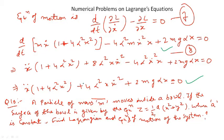Hello everyone. Today we will solve some more numerical problems based on Lagrangian equations. The first problem is: a particle of mass m moves inside a bowl. If the surface of the bowl is given by the equation z = (a/2)(x² + y²), where a is a constant, find the Lagrangian and equation of motion of the system.